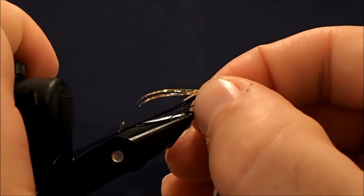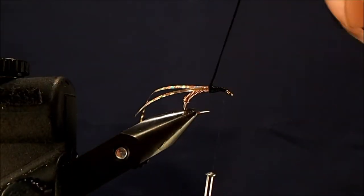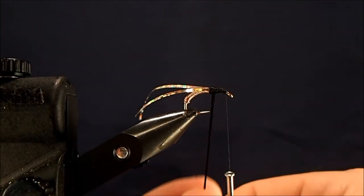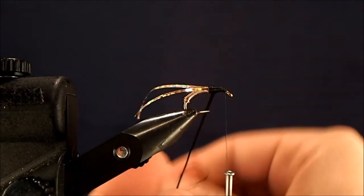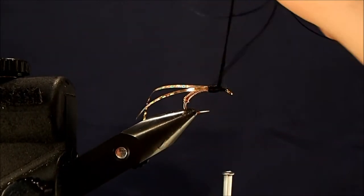I'm just going to readjust my hook just to give me a steeper angle so that my thread doesn't slide off. And then I'll just take nice even turns of this floss, just building up that thorax.